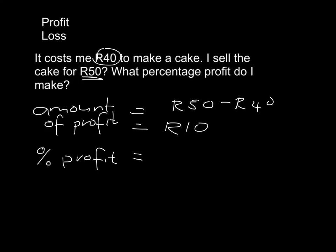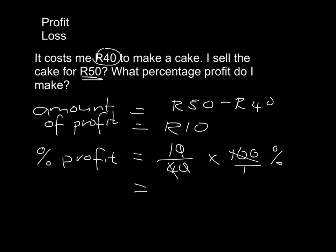What is the percentage profit? It is 10 out of the starting amount of 40, turned into a percentage. And 10 over 40 is just 1 over 4, and 1 over 4 times 100 - 4 goes into that once and into there 25 times. So it will be 25%. The percentage profit was 25% - 25% of what it costs you is what you get as profit.